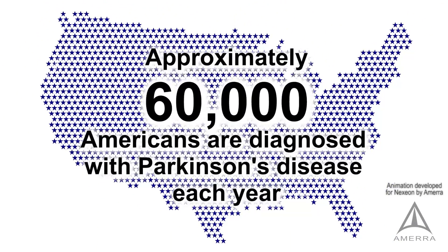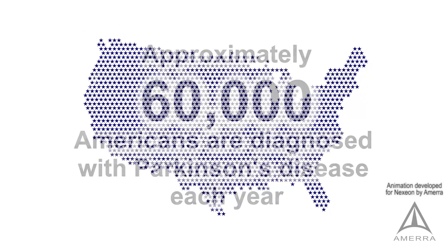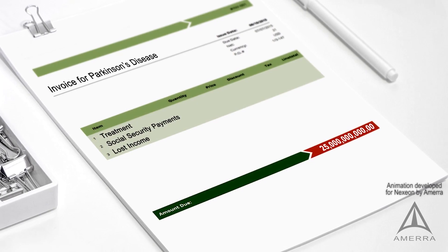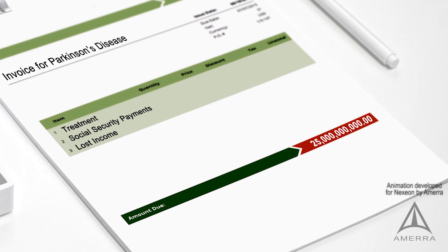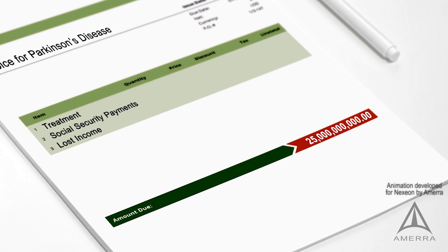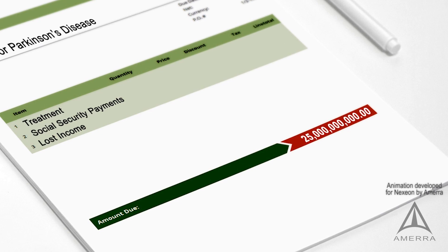Approximately 60,000 Americans are diagnosed with Parkinson's disease each year. The cost of Parkinson's, including treatment, social security payments and lost income from inability to work, is estimated to be nearly $25 billion per year.